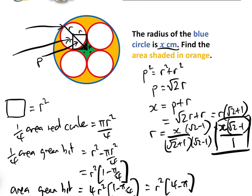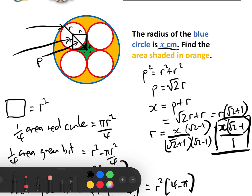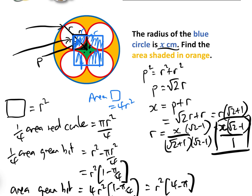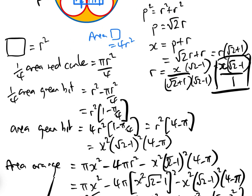There is actually a simpler method. If we look at this blue square here, its area is 4r squared, because its side is 2r by 2r. We don't need to find the area of the green bit now, because the blue square includes a quarter of each red circle — so it basically contains one full red circle. So all we need to do to find the orange bit is take the area of the blue circle, take away 3 red circle areas, then take away the area of the blue square.